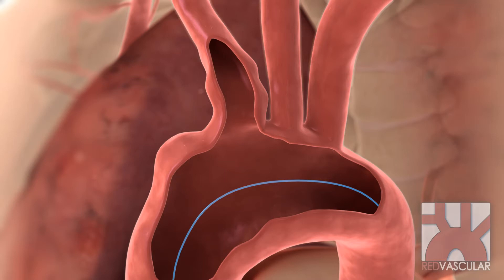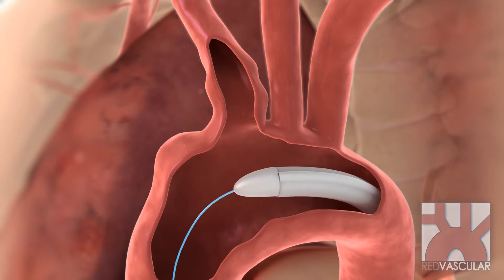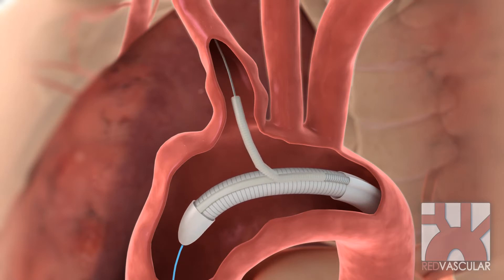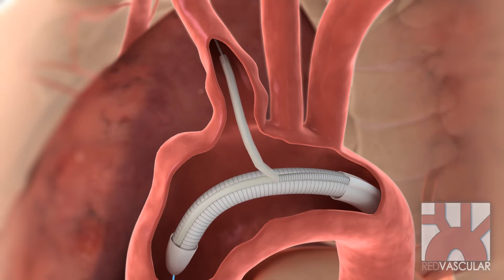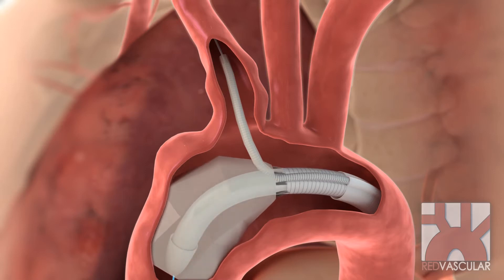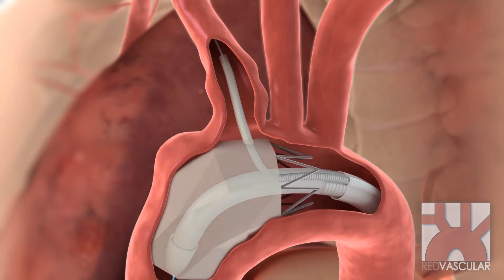Next, advance the delivery tube over the main guide wire into the aortic arch. Place the branch guide wire into the branch artery. Advance the delivery tube farther toward the aortic root and slide the branch graft into the branch artery. Retracting the main sheath causes the main graft to expand in the aorta.